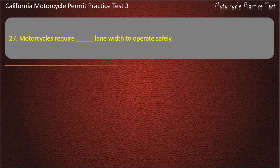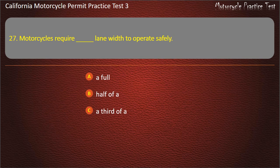Question 27. Motorcycles require how much lane width to operate safely? A full lane, half of a lane, a third of a lane, or a quarter of a lane. Answer: A full lane.